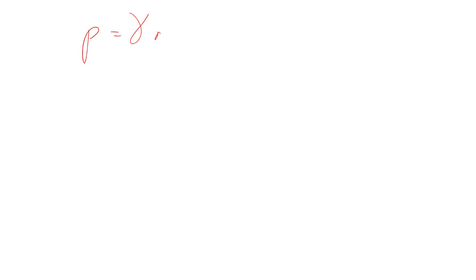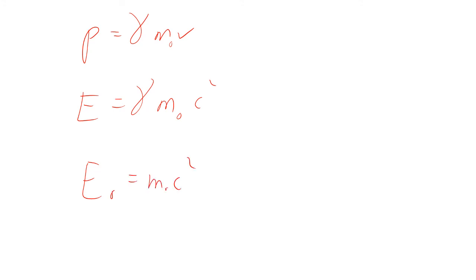So we have three new equations: momentum equals gamma M-naught V; energy equals gamma M-naught c-squared; and E-naught, the rest energy, equals M-naught c-squared. The mass M equals gamma times M-naught, so close to zero rest mass leads to behavior approaching the speed of light.